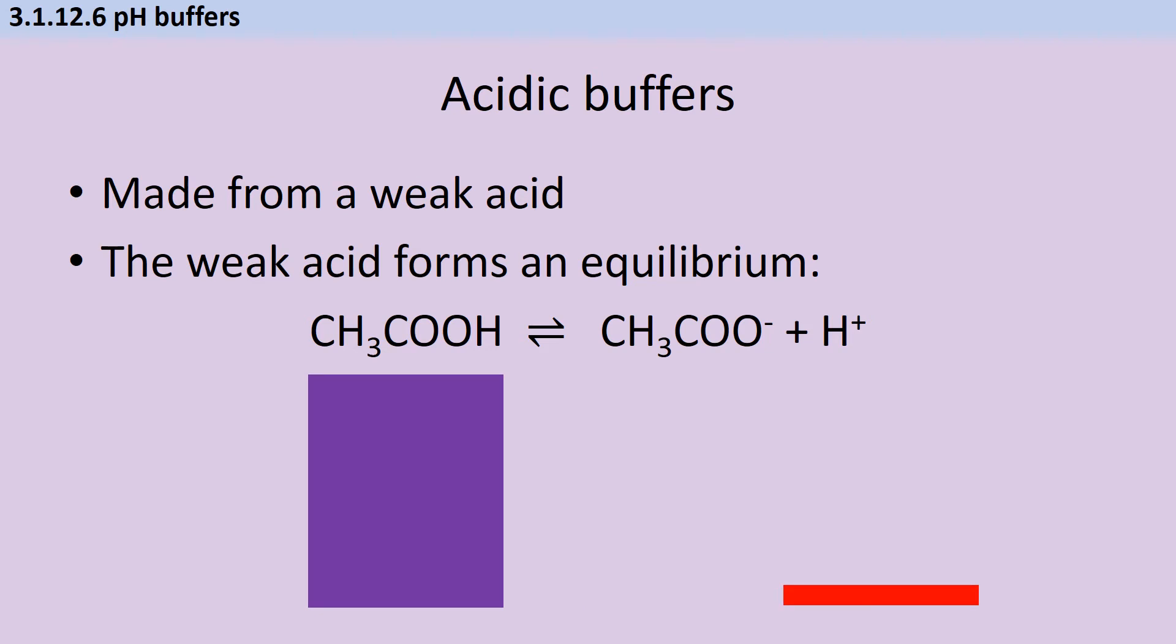Now, there's more ethanoic acid, and the concentration of that will increase. The ethanoate ions have been removed from solution, so the concentration has decreased. And the hydrogen ion concentration will be close to where it was before I added the acid. You can see here that even though I've only added a tiny amount of acid, I've run out of ethanoate ions. And that means that the buffer now can't do its job anymore.